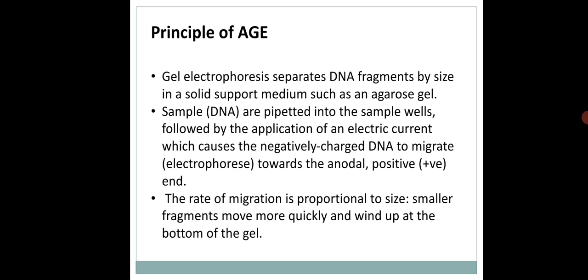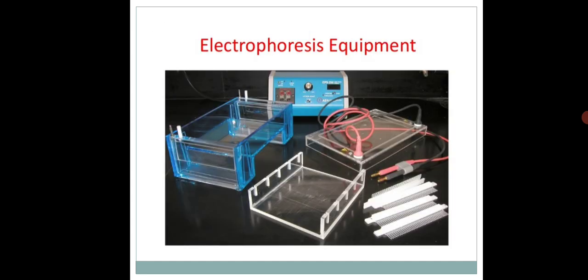Separation is done by moving negatively charged DNA. We will keep the DNA in an agarose gel and apply the electric field. The electrophoretic unit contains two electrodes. If we look at the diagram of the complete apparatus — the electrophoresis equipment or electrophoretic unit — it consists of two electrodes.